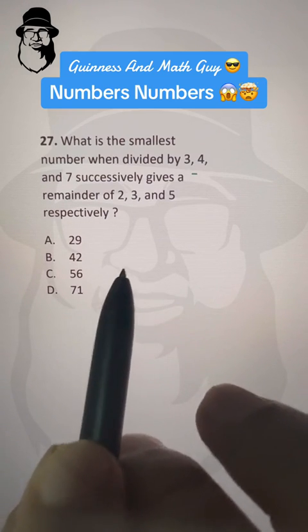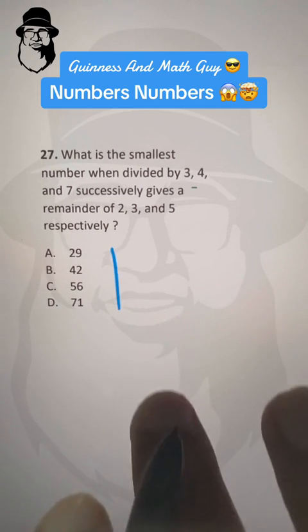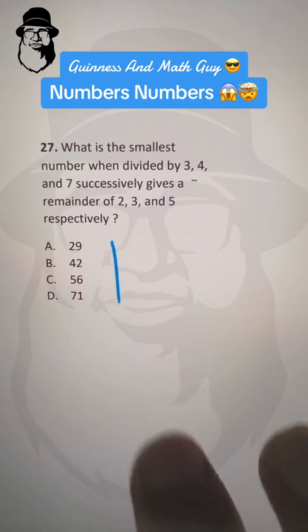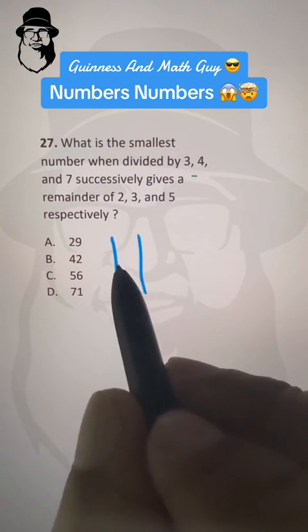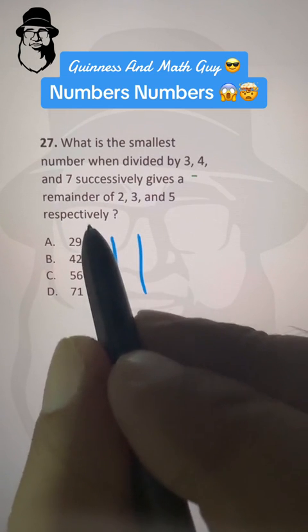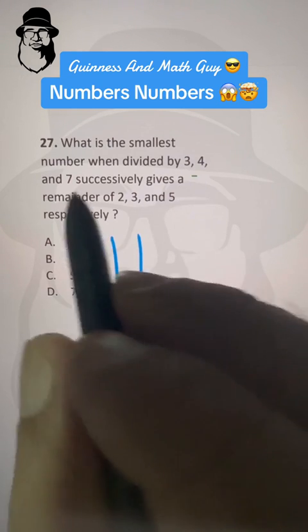Let's keep the question same with 20. I will tell you how to do it with 20 and then we will come to original question. So here we can write the divisors. Divisors are 3, 4, and 7.